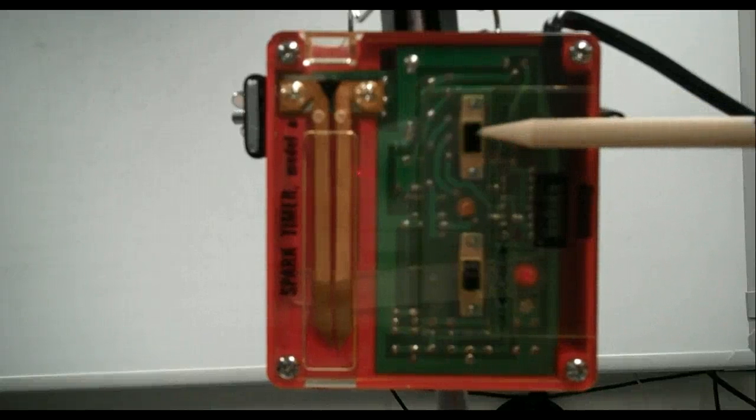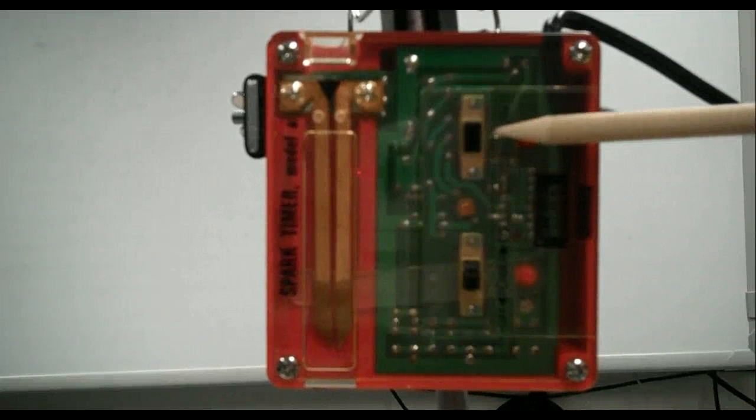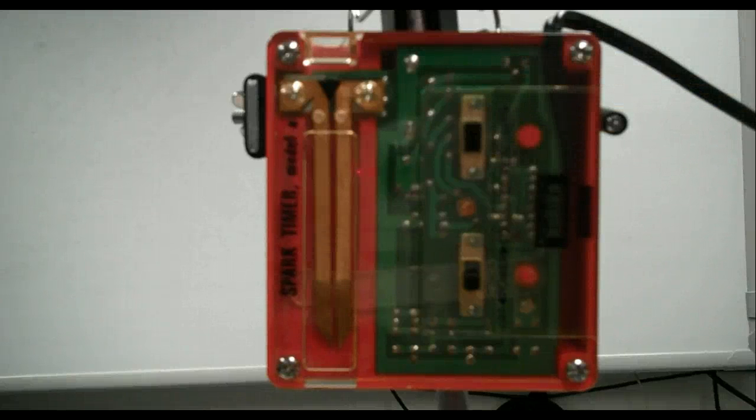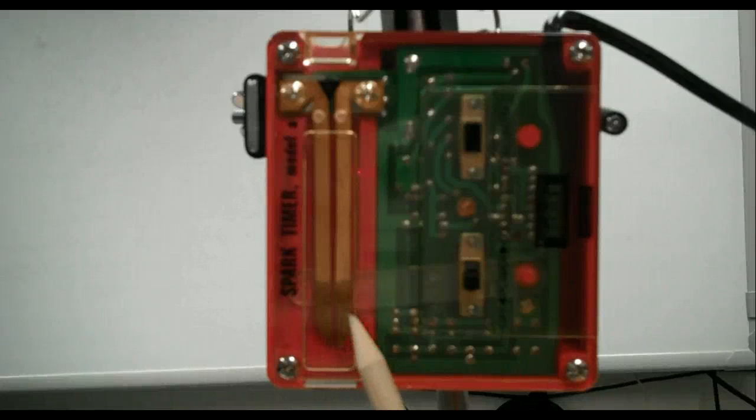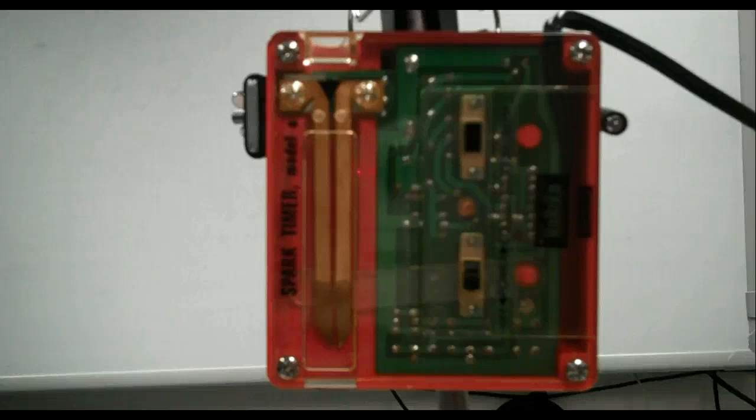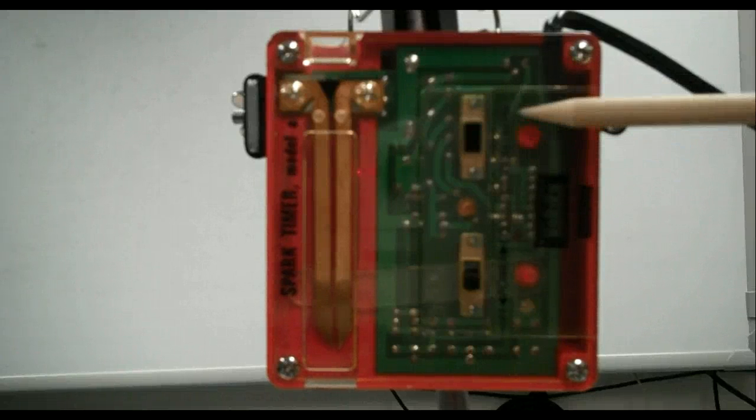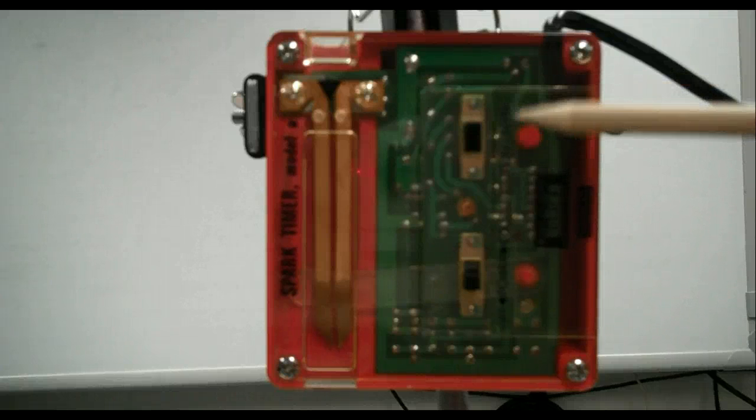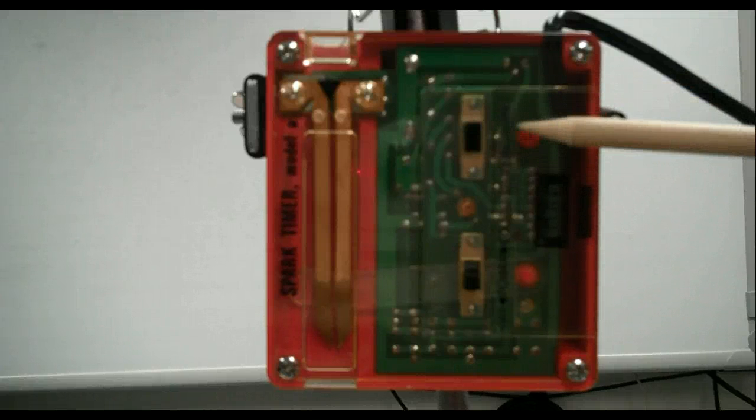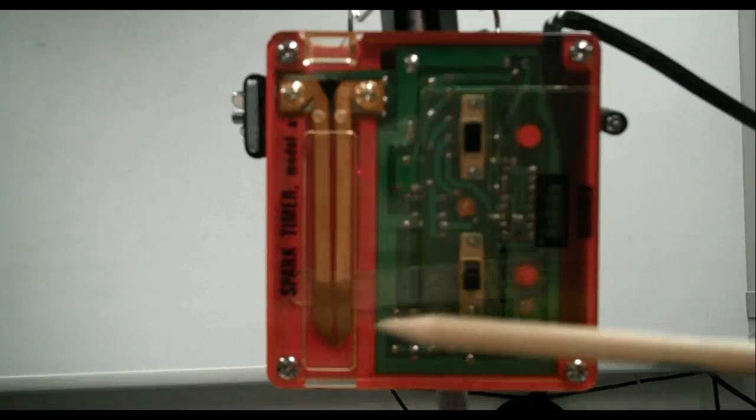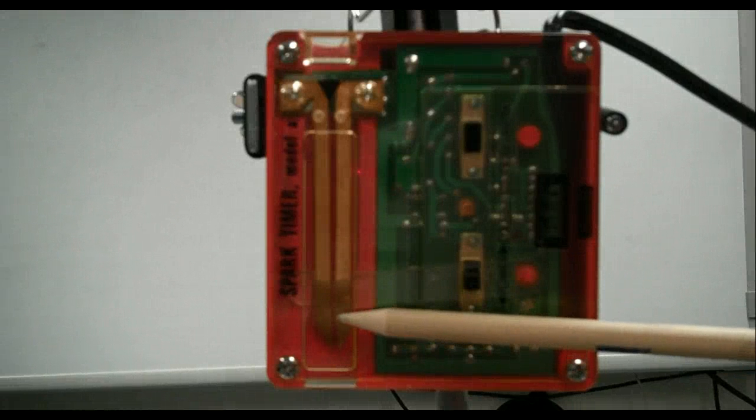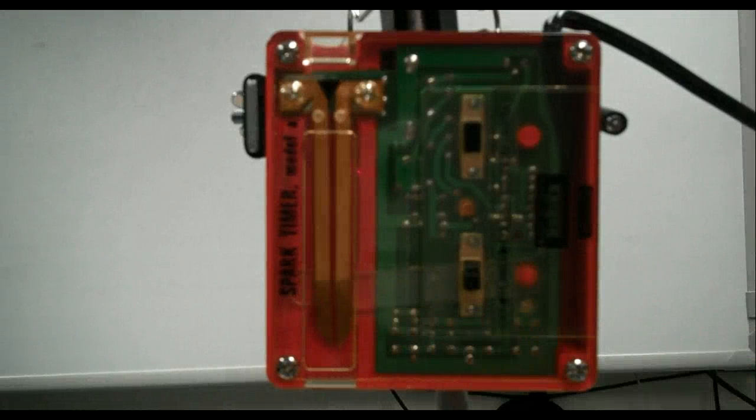This setting right here changes from 10 Hertz to 60 Hertz, and what that means is these electrodes, when I turn on the power, will send an electric current between the two tips at either 10 times a second or 60 times a second. So we're going to use for this lab the 60 Hertz setting, which means sparks will be generated between the electrodes 60 times a second.